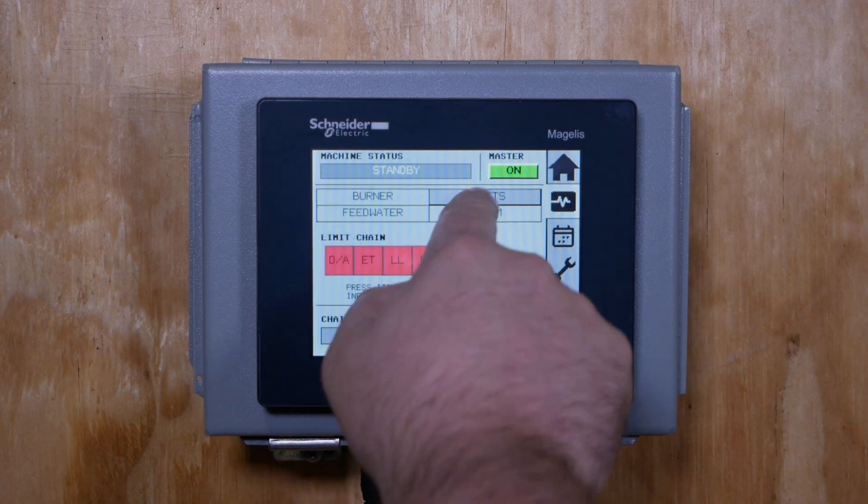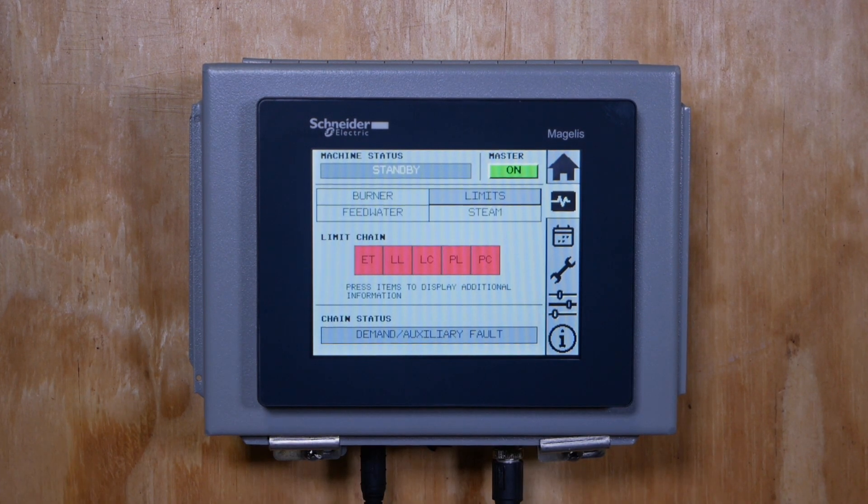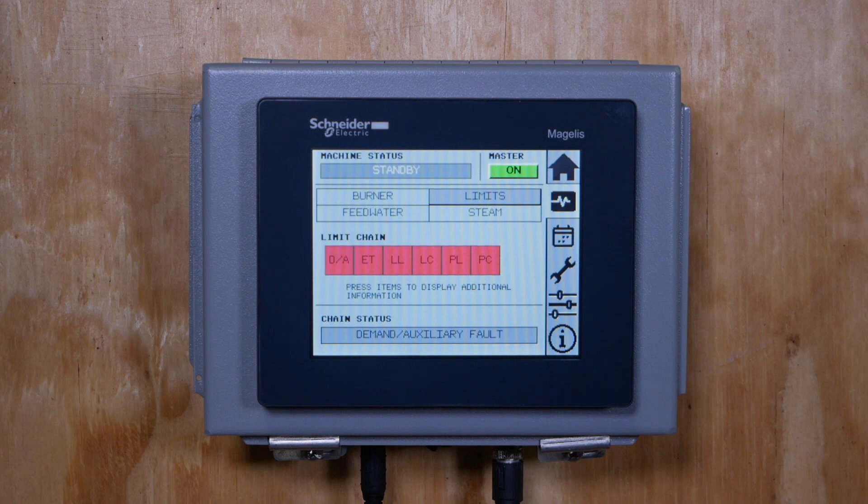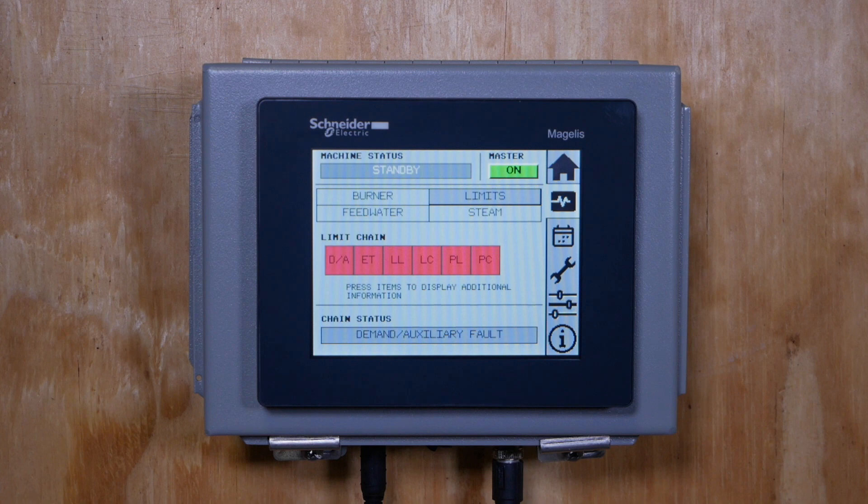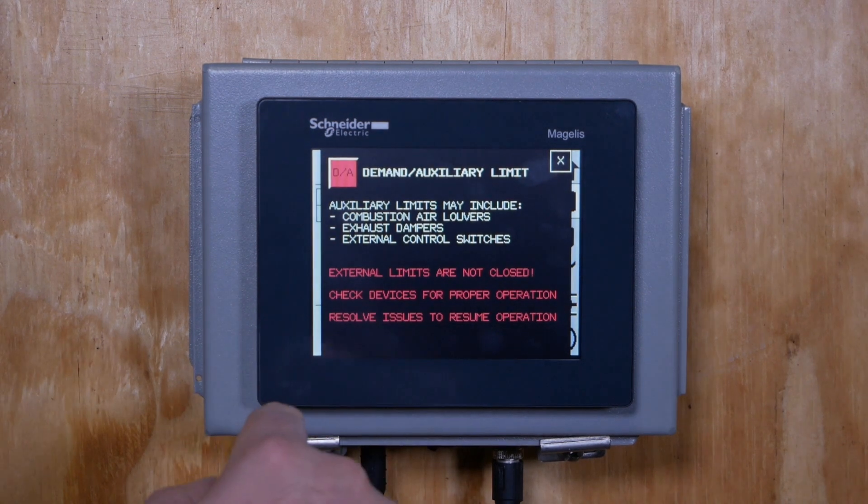The limit page displays the safety limit chain. This is a digital representation of all safety controls on the steam generator. If the control has power, it is displayed green. If the control does not have power, it is displayed red. A flashing red indicator pinpoints where the limit chain is broken. Each safety device indicator can be tapped for additional information.